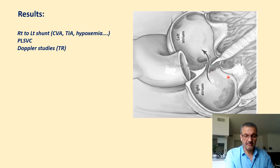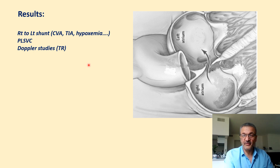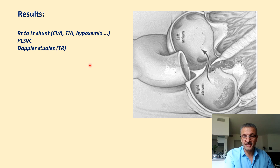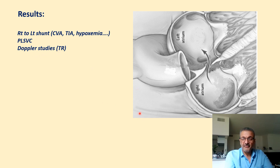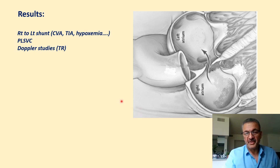Another indication for the bubble test is persistent foramen. The final indication is when we have low or not strong tricuspid regurgitation (TR) and we need to evaluate pulmonary pressure by peak velocity of the TR Doppler. If we have a weak Doppler signal, we can use bubble test. Even in this case, usually we use a contrast agent, but we can still use agitated normal saline.